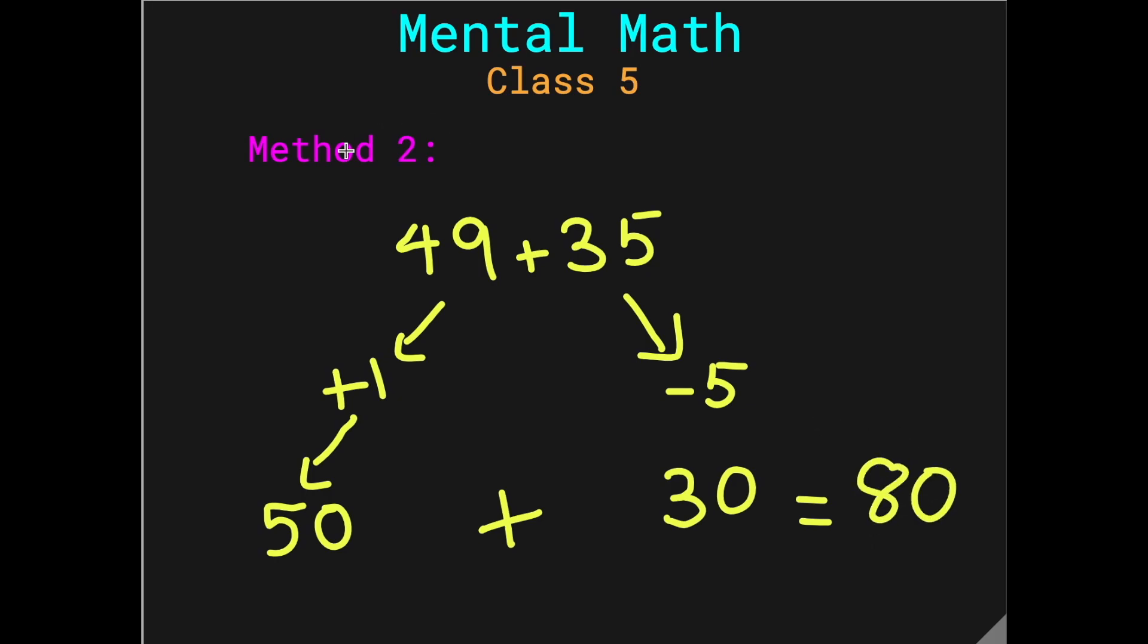Now, this is not the final answer. We have to do the opposite of the operations we did to make the question numbers into multiples of 10. So, we added a 1, now we have to subtract a 1. We subtracted a 5, now we have to add a 5. Now, I would recommend that you do the addition first. So, 80 plus 5 is 85, and 85 minus 1, very simple. Just remove a 1 from 85 to get an 84. And this is the final answer.